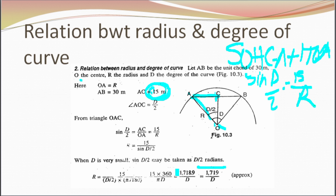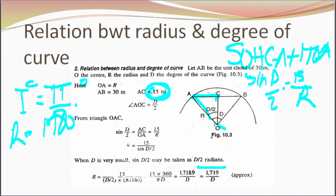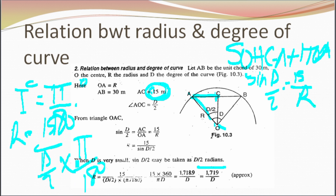By simplifying, the denominator becomes D/2 × π/180, which equals D × π/360. So R equals 15 divided by (D × π/360). Rearranging, we get R = 15 × 360 divided by (D × π), because one radian equals π/180 degrees, and 180 times 2 equals 360.